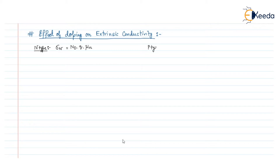Similarly, if we consider the p-type semiconductor, then the conductivity of the p-type material, sigma p, is equal to the acceptor concentration N_a multiplied by q multiplied by the hole mobility, mu p.